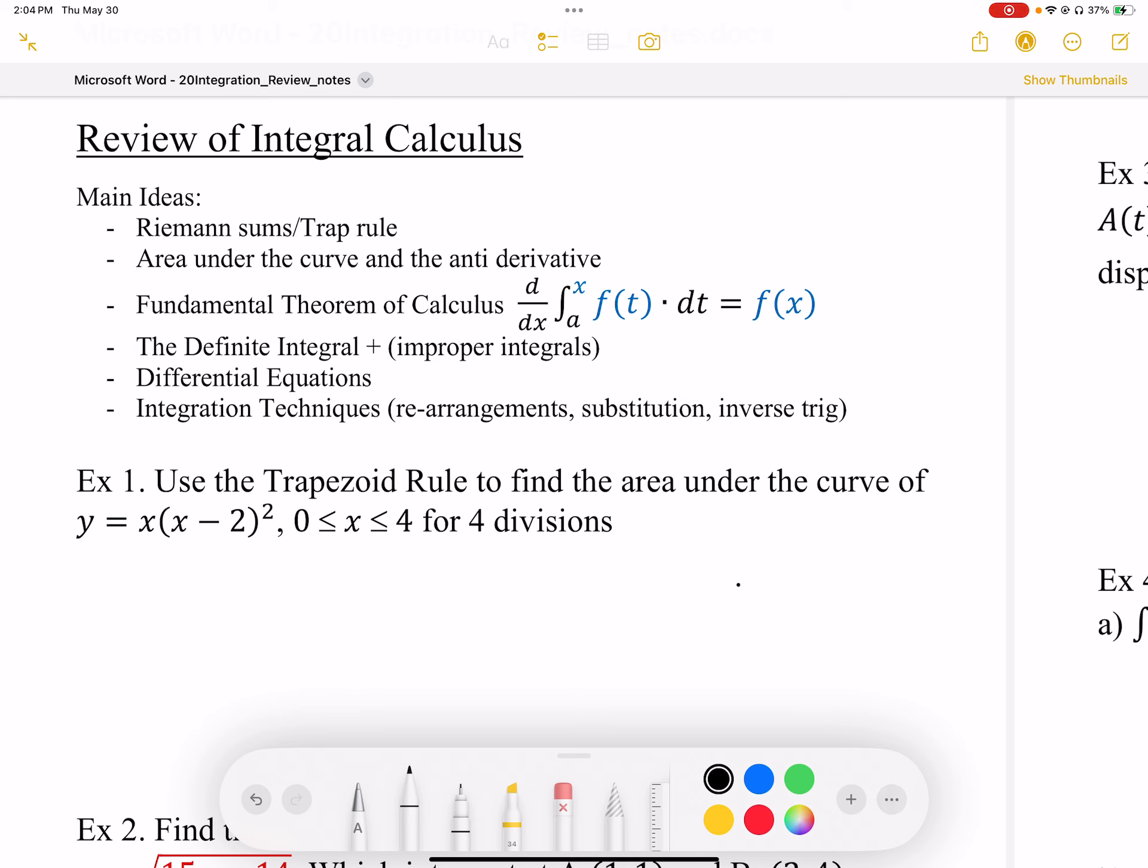The fundamental theorem of calculus is a really important part of this unit, where the derivative and the antiderivative undo each other. So if we have the derivative of an antiderivative, we just get back to what we started with, which is our f(t) in this particular case.